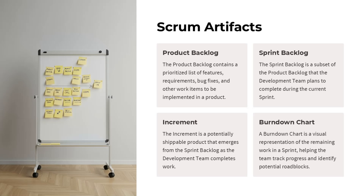The Scrum artifacts are the key elements that help organize and track the work in a Scrum project. The product backlog is the prioritized list of all features, requirements, bugs, and other work items to be implemented. The sprint backlog is a subset of the product backlog that the development team plans to complete during the current sprint. The increment is the potentially shippable product that emerges from the sprint backlog as the team completes their work. The burndown chart is a visual tool that tracks the remaining work in a sprint, helping the team monitor progress and identify roadblocks. These artifacts provide transparency and help the Scrum team plan, track, and deliver the product incrementally.